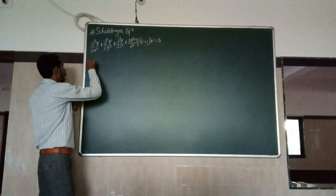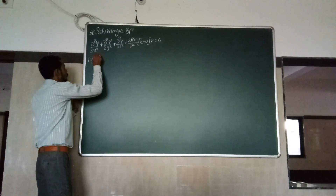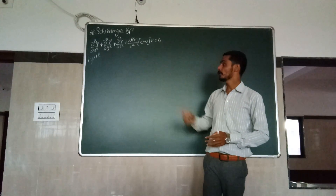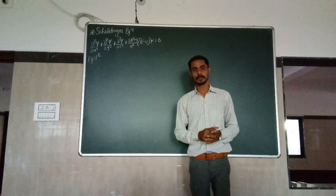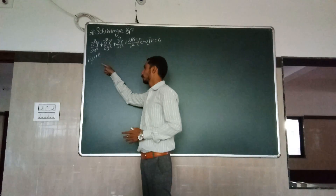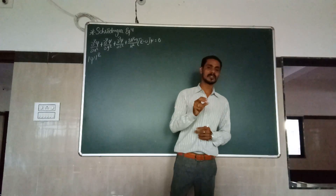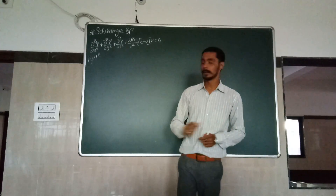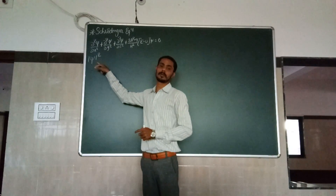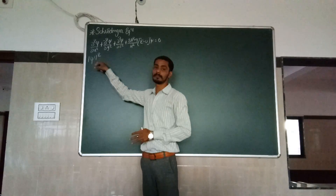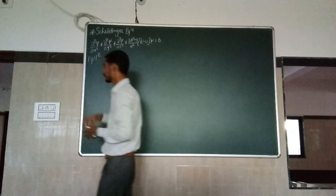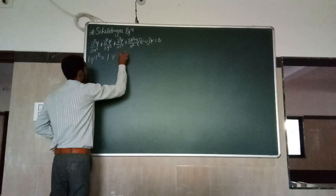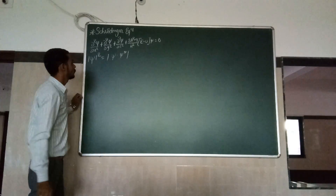We are going to look at the magnitude of psi squared. Psi is a complex quantity, but the magnitude of psi squared is always real and positive. The magnitude of psi squared represents the probability of detecting a particle in a given small volume. We are interested in finding the value of this. This can be treated as the product of psi and its complex conjugate.